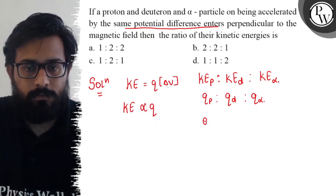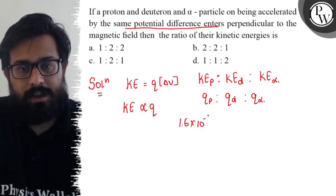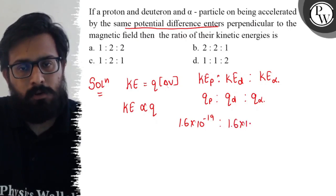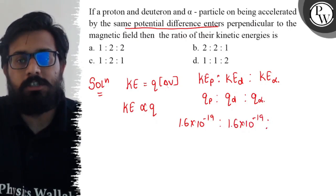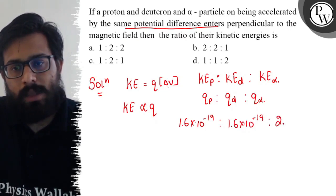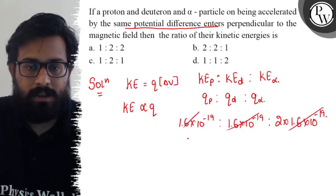Charge on the proton equals the charge on the electron, which is 1.6 × 10^-19. Charge on the deuteron is the same as that of a proton. If you talk about the charge on the alpha particle, it equals two times the charge on the proton.